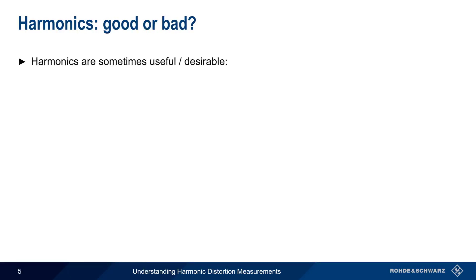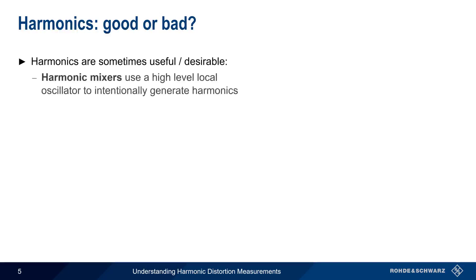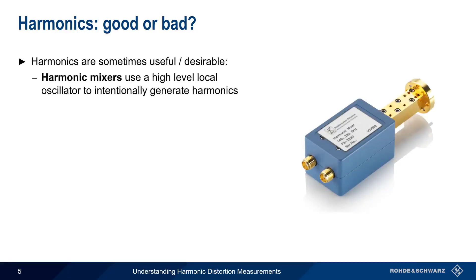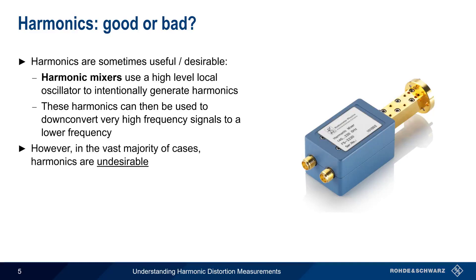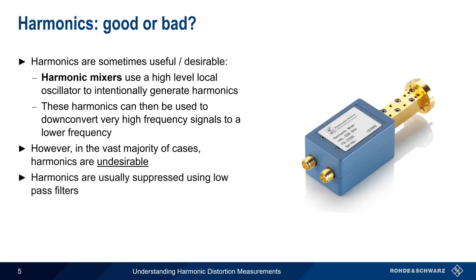There are a few cases where harmonics can be useful or desirable. For example, harmonic mixers can be used to intentionally generate harmonics, which are then used to down-convert microwave or millimeter-wave signals to a lower intermediate frequency. However, in the vast majority of cases, harmonics are undesirable and should be kept as low as possible. Low-pass filtering is the most common way in which harmonics are suppressed or attenuated.